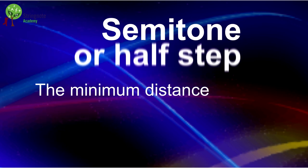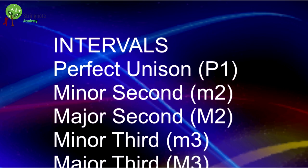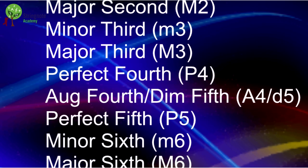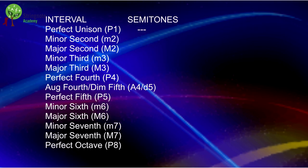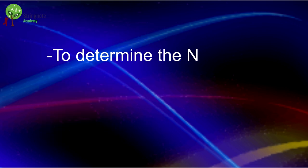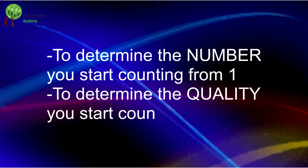The minimum distance between two notes in traditional western music is the semitone. Each of these intervals has a fixed number of semitones. With the list we've made, we can easily create a table of the number of semitones each interval has. Now remember this: the number of the intervals is counted from one, but the semitones are counted from zero.